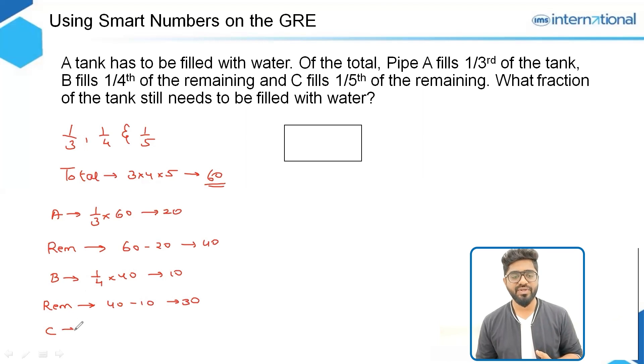Of 30, C fills 1/5. So 1/5 of 30 equals 6, and the remaining part that still needs to be filled with water would be 30 minus 6, which is 24. So here we have the answer again. The part or the fraction that still needs to be filled with water equals 24 out of the total, which is 60. So 24 over 60 is 2 over 5. We got the same answer again: 2/5.